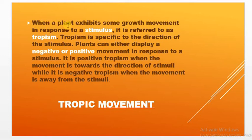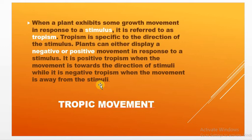You can see the definition: when a plant exhibits growth movement in response to a stimulus, it is referred to as tropism. Tropism is specific to the direction of the stimulus — plants display either negative or positive movement. Negative movement means moving away from the stimulus, called negative tropic movement. Moving towards the stimulus is called positive tropic movement or positive tropism.